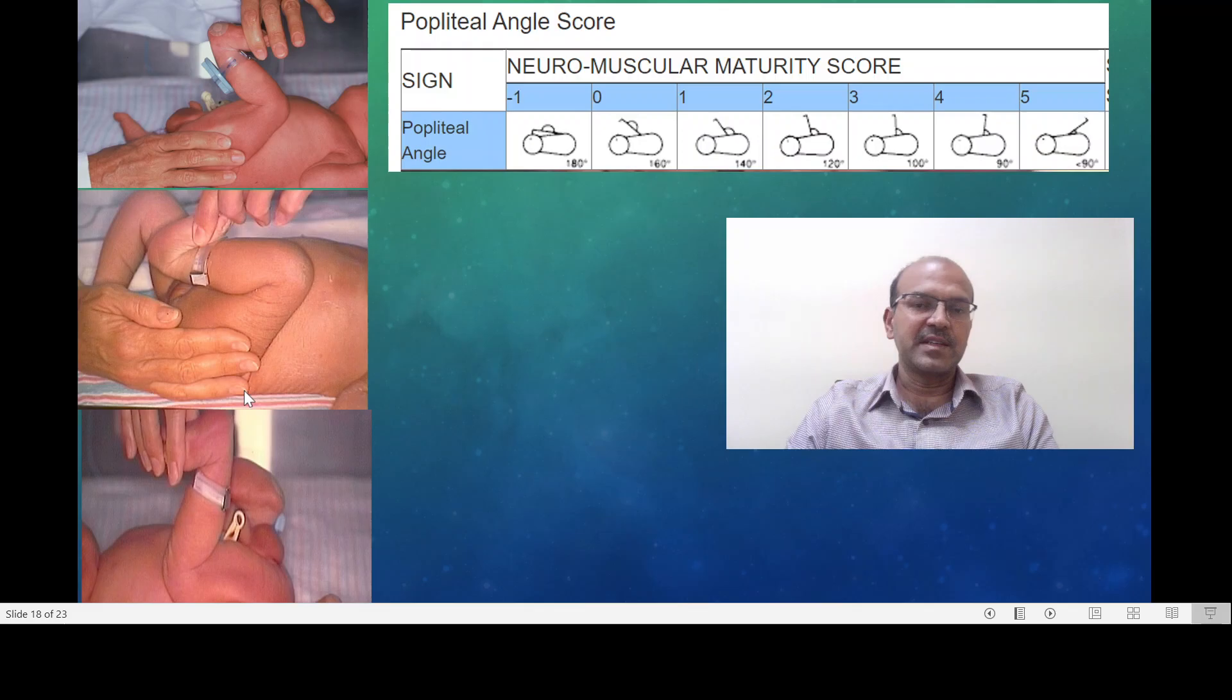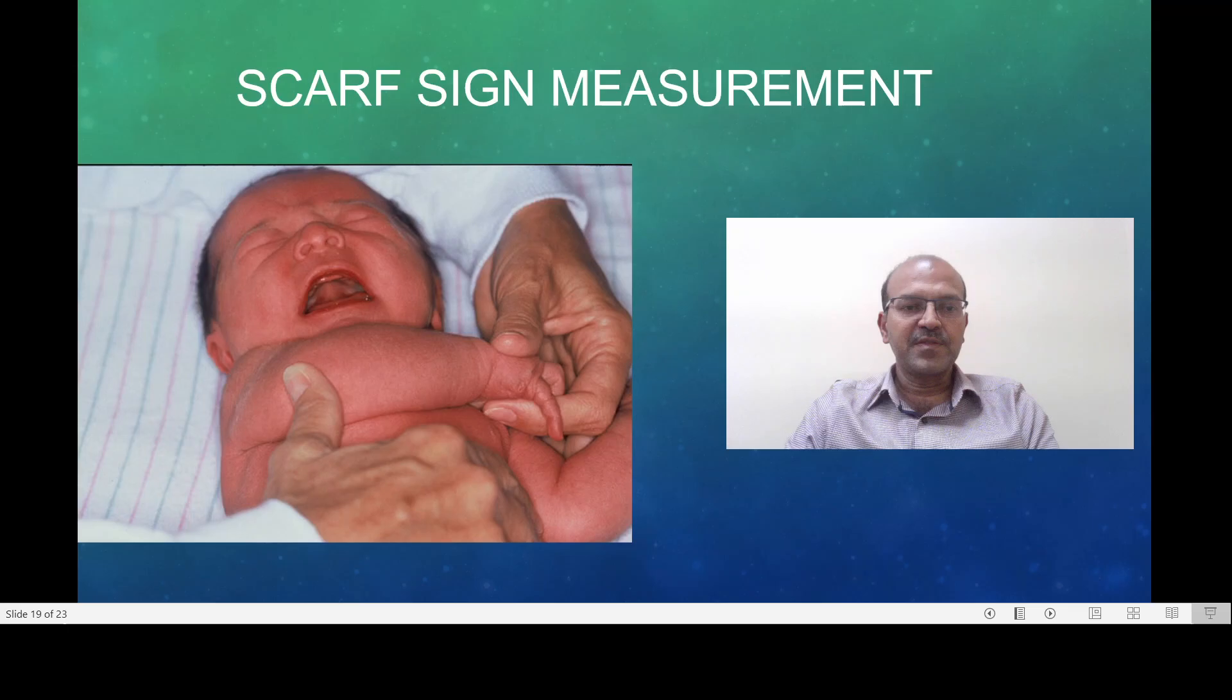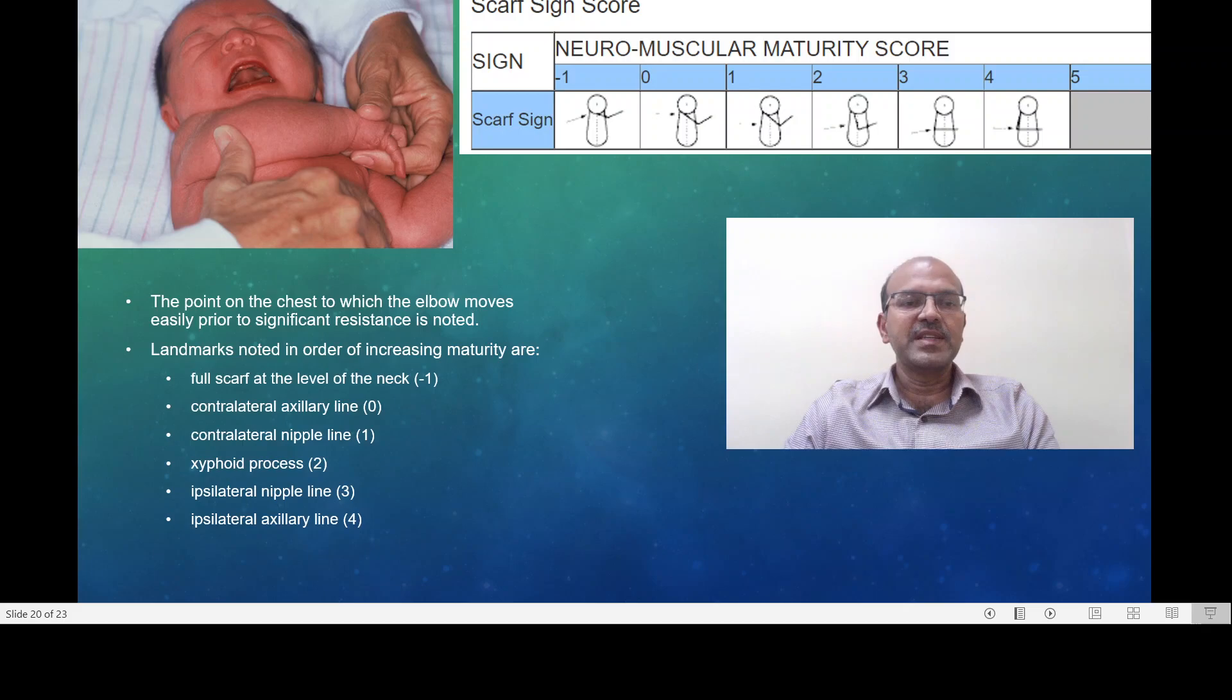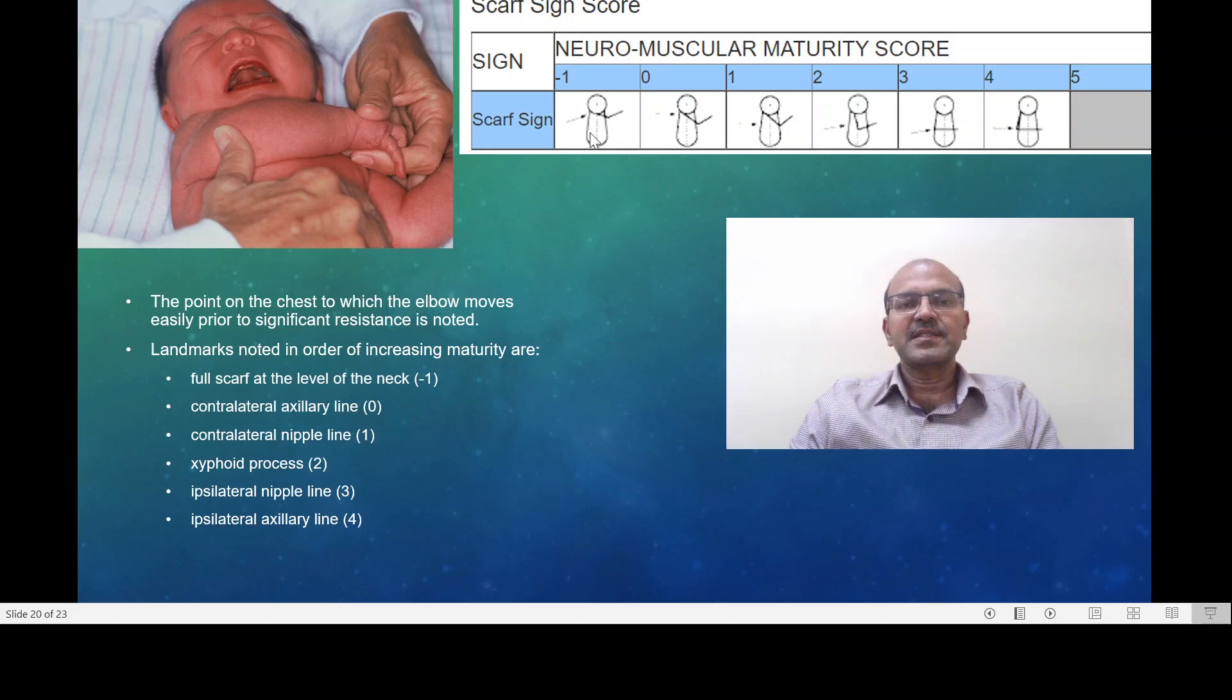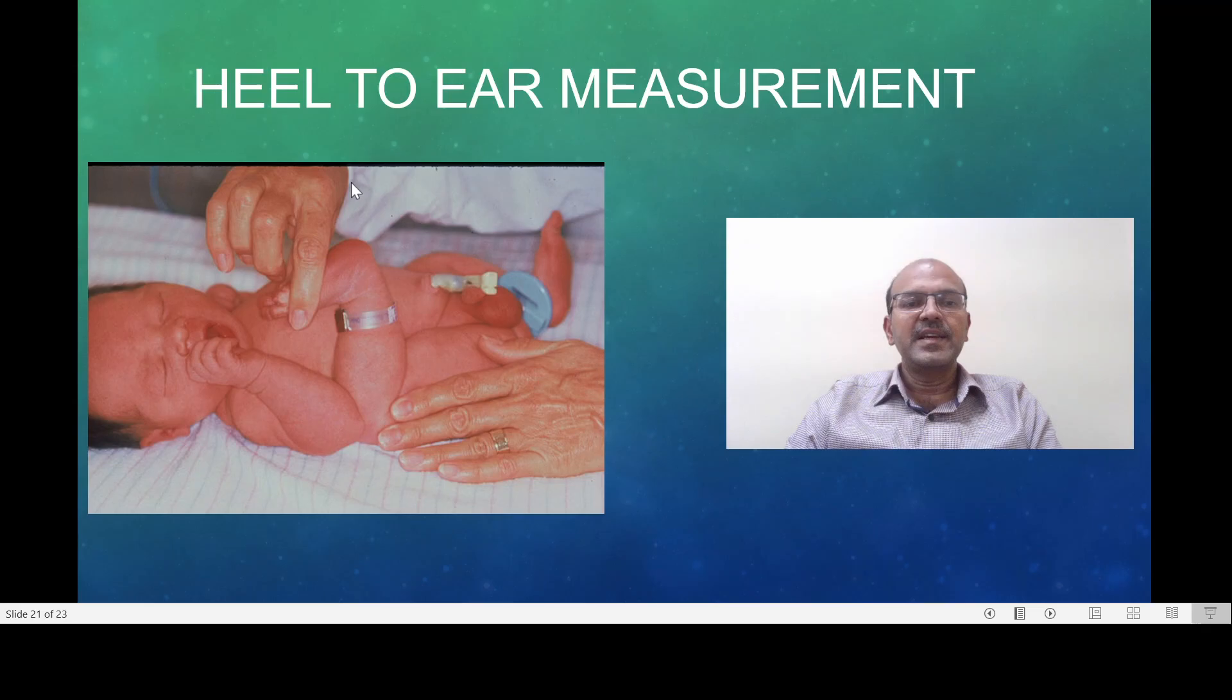The hip should be stabilized with the other hand when you are extending the knees and you hold the foot and stretch it. The next sign of neuromuscular maturation is the scarf sign and here the point on the chest to which the elbow moves easily prior to significant resistance. So you hold the hand on the other side and stretch it across the chest and see where the resistance is happening. Depending on where the resistance is noted, if the elbow has almost crossed the chest on the other side it becomes minus 1. If it is just reaching the other end it's 0 and then the midline is 2 and just before the midline is 3 and if it's hardly moving it's 4. These are the markings and the score that you give them.